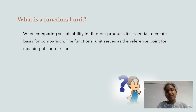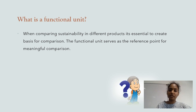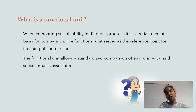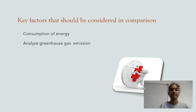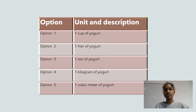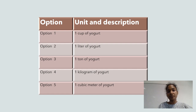When comparing sustainability in different products, it's essential to create a basis for comparison using a unit that serves as the reference point for meaningful comparison. The functional unit allows a standardized comparison of environmental and social impacts. Factors to consider include energy consumption, greenhouse gas emissions such as carbon dioxide, transportation impacts, and packaging impacts. The functional unit options considered were: one cup of yogurt, one liter of yogurt, one ton of yogurt, one kilogram of yogurt, and one cubic meter of yogurt.